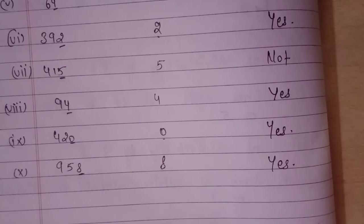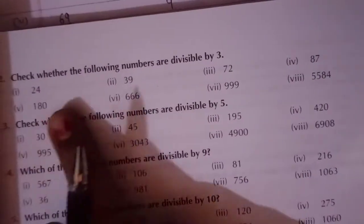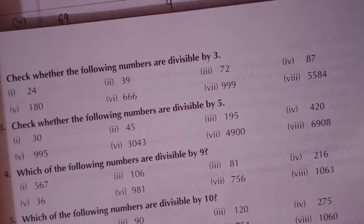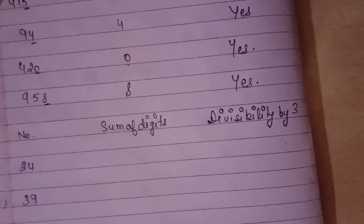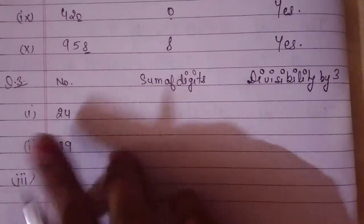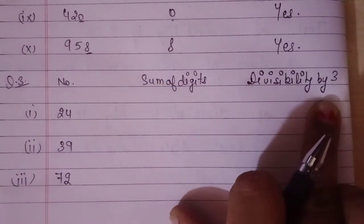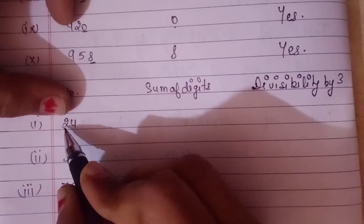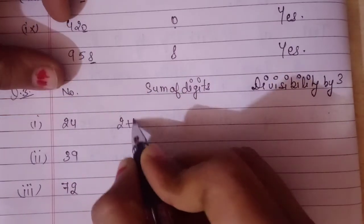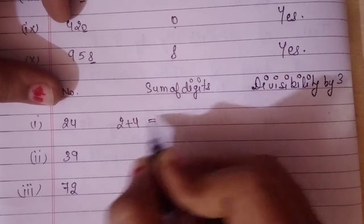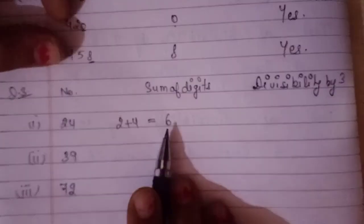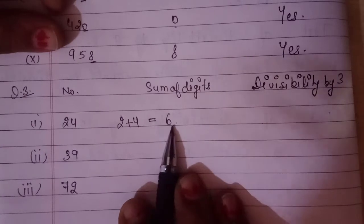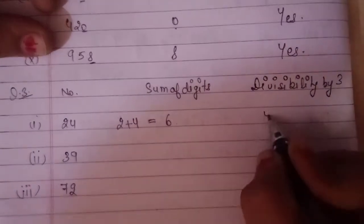Now the next question: check whether the following numbers are divisible by 3. We apply the divisibility rule of 3 — the sum of the digits should be divisible by 3. For the first number, the digits are 2 and 4. Sum is 2 plus 4 equals 6. Is 6 divisible by 3? Yes, 3 times 2 is 6. So this number is divisible by 3; answer is yes.